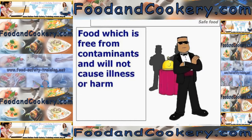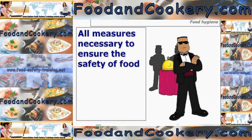First of all, the definition of safe food: food which is free from contaminants and will not cause illness or harm. We will look at the different types of contaminants later on, but please make a note of the definitions as we go through, as these do come up in the exam. The second definition is food hygiene: all the measures necessary to ensure the safety of food.